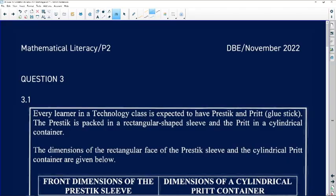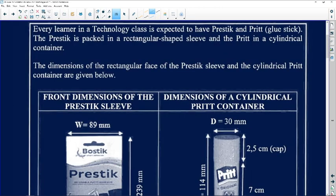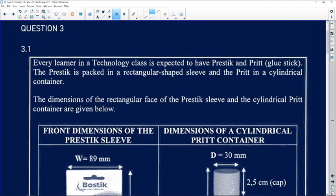Let us now look at question three of paper two of the 2022 final exam paper. So question three says every learner in a technology class is expected to have Prestig and Prit glue. The Prestig is packed in a rectangular shaped sleeve and the Prit is cylindrical.